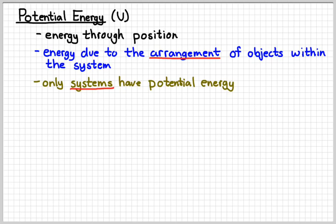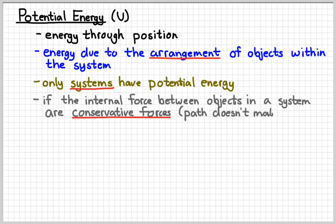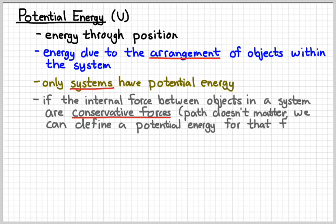Only a system of objects can have potential energy. It's real important to know that. An object, single object by itself, can't have any potential energy. If the internal forces between objects, so the objects within a system, are considered conservative forces, which means that the path doesn't determine how much work is done, then we can define a potential energy for that force.